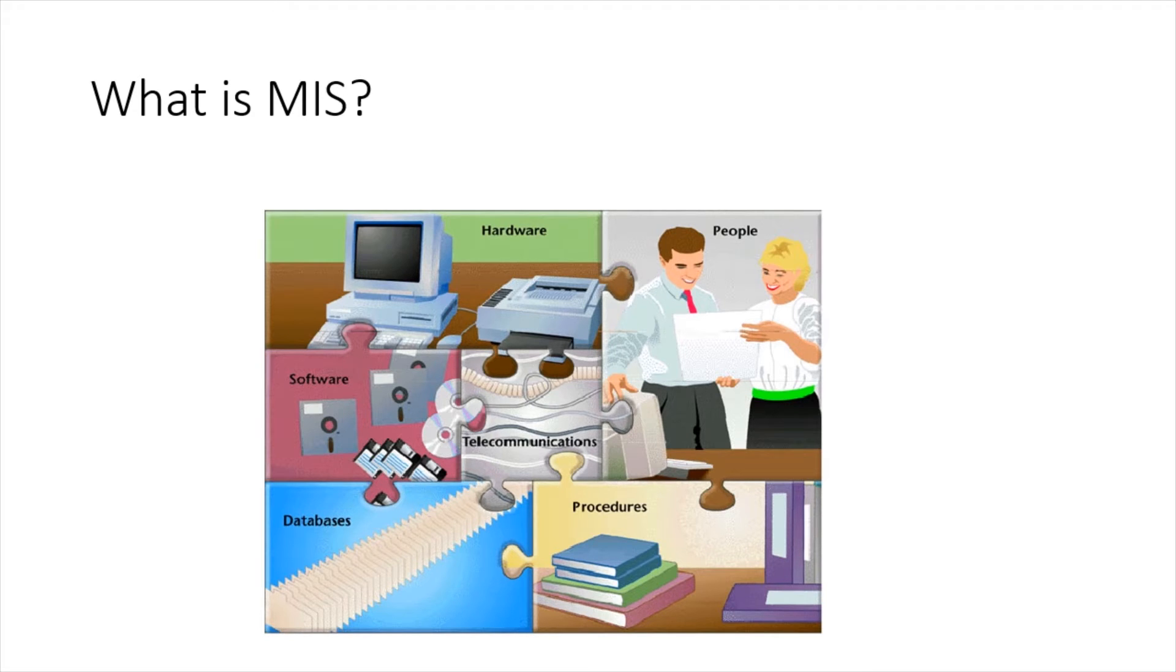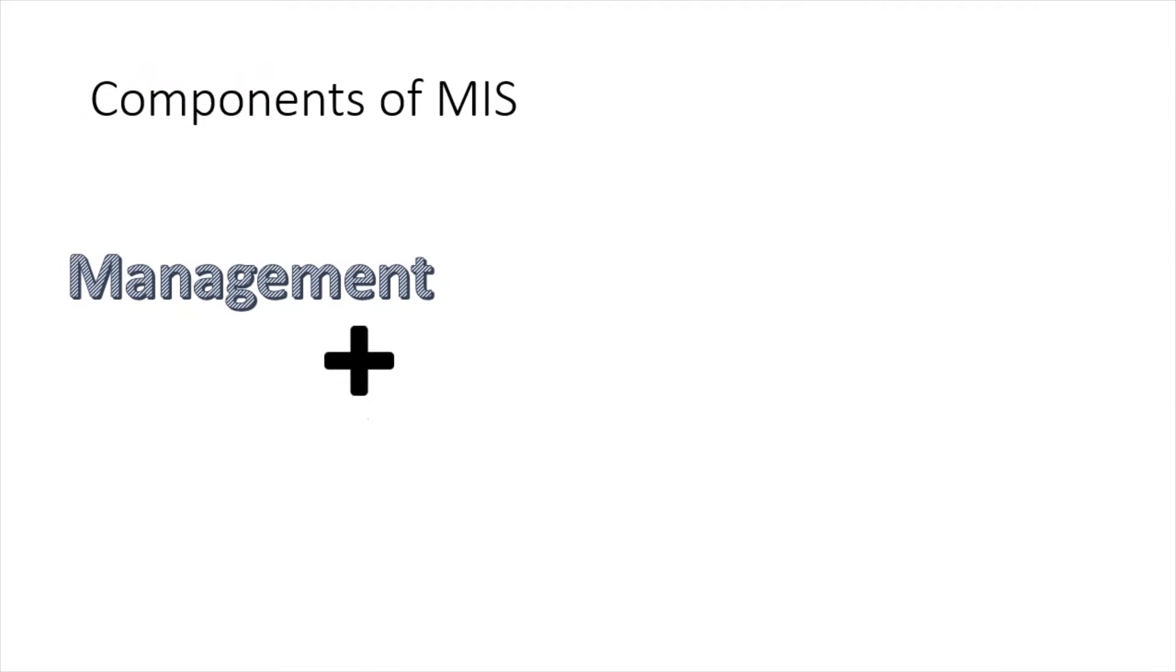Management information system is made up of three terms: management, information, and system. Let us get to know about these terms one by one.